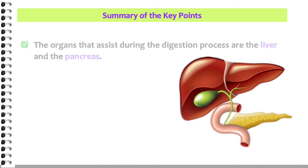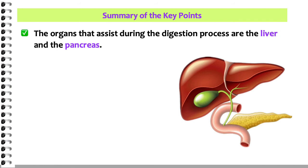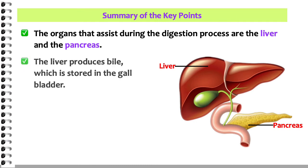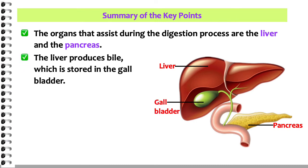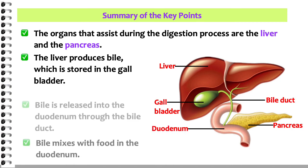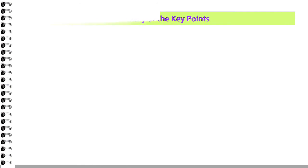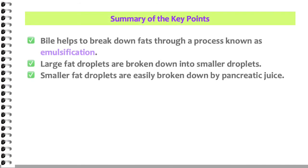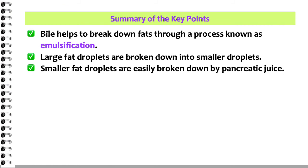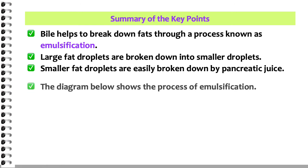The organs that assist during the digestion process are the liver and the pancreas. The liver produces bile, which is stored in the gallbladder. Bile is released into the duodenum through the bile duct. Bile helps to break down fats through a process known as emulsification — large fat droplets are broken down into smaller droplets, which are then more easily broken down by pancreatic juice.